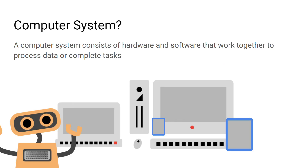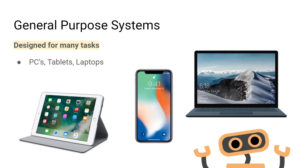When you combine hardware and software — we'll look at what software is in a later video — and allow them to process data and complete tasks, you get something called a computer system. Computer systems that are designed for many different tasks are referred to as general purpose systems. Some examples include PCs, tablets, laptops, and smartphones.